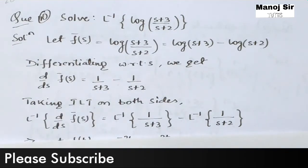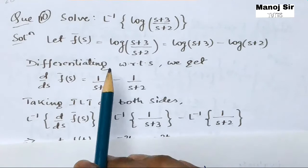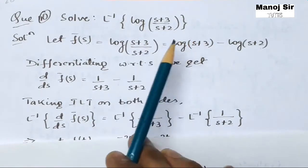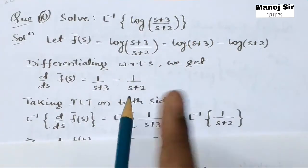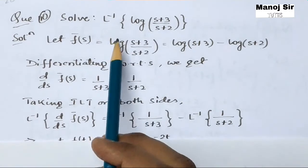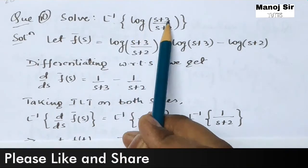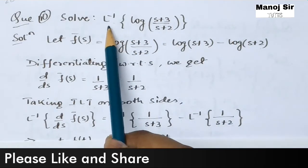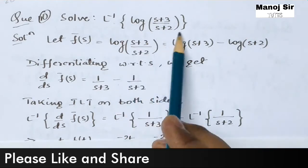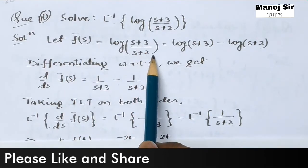This is one of a different type of question where you can see a log form. In video number 28 and 29 we are going to solve two problems — problem number 10 and 11 — based on this log type. So let us start with the problem: solve or evaluate the inverse Laplace transform of log[(s+3)/(s+2)]. This is my f̄(s), so let f̄(s) = log[(s+3)/(s+2)].